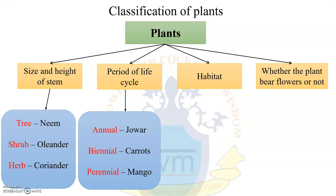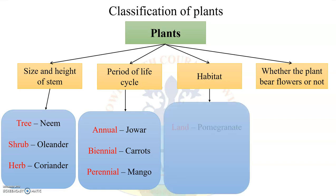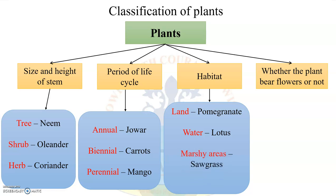According to the habitat — meaning the place where the plants grow — it can be further divided as: land, example pomegranate; water, example lotus; marshy areas, example sawgrass; and desert, example cactus.